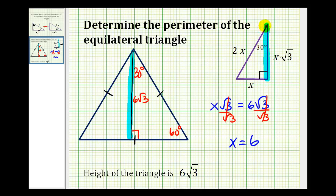So if this side has a length of two x, this side would also have a length of two x, which would be two times six, or twelve units. And because it's an equilateral triangle, all the sides would have a length of twelve units.